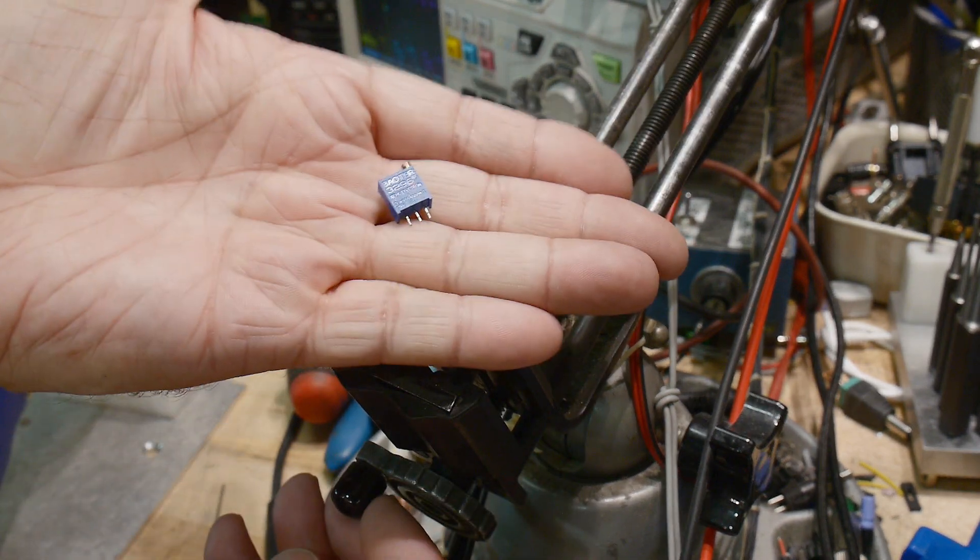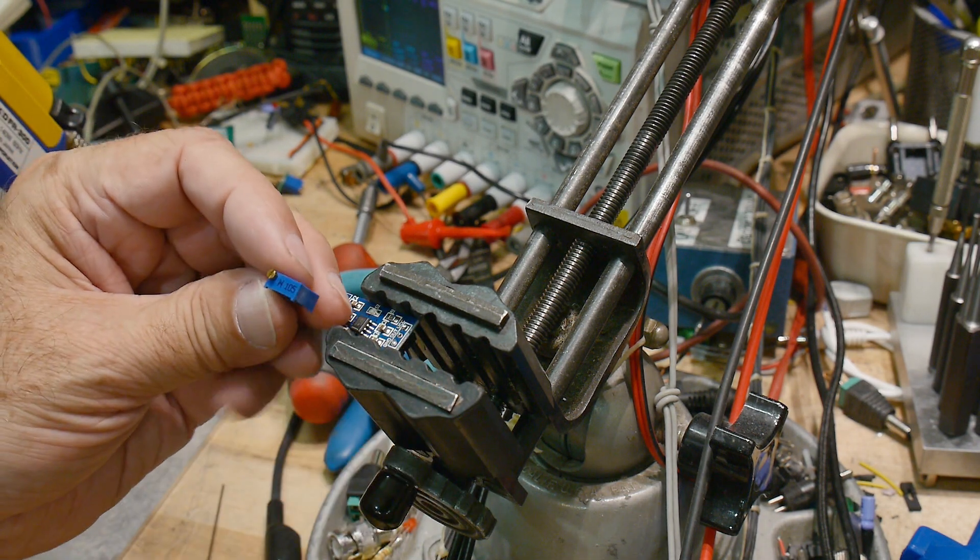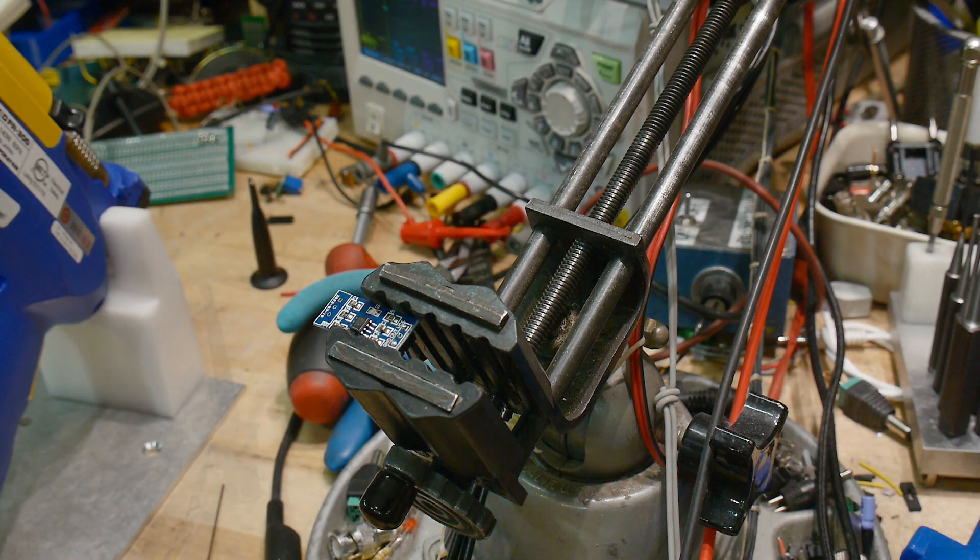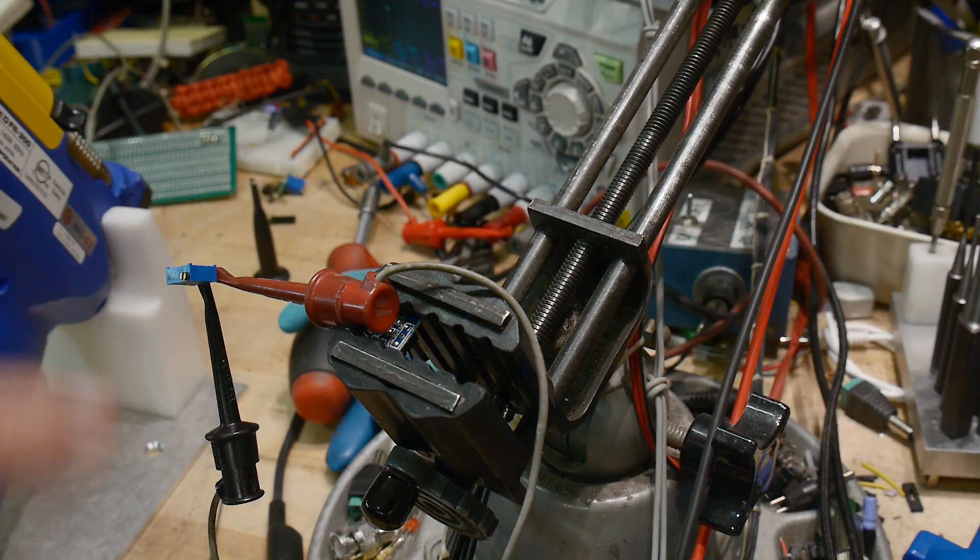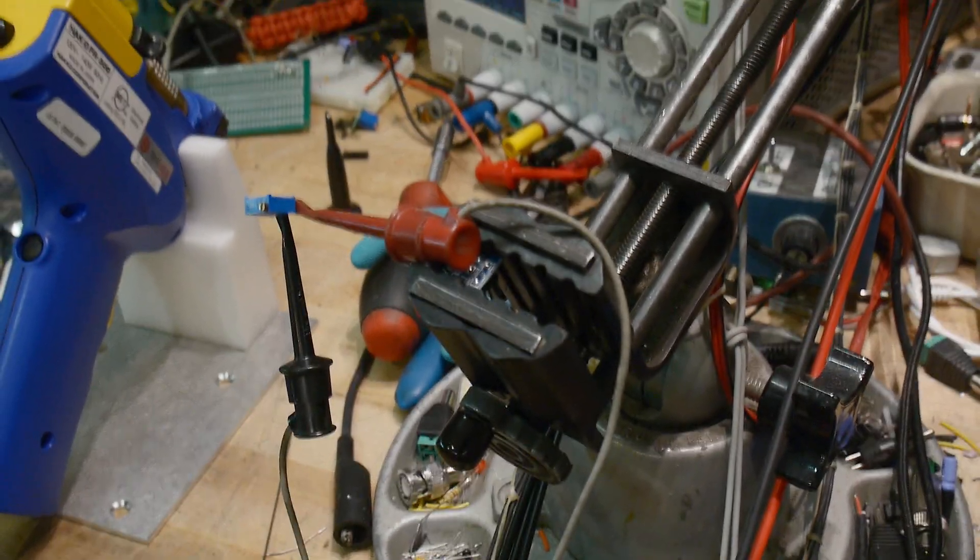So now we've got to figure out what potentiometer is being used. Since it's a 105, which is a, wow, I think that's a one meg. Let's measure them. Okay, so I've got some clip leads on it. We can take a look. And it is saying one meg. Yeah, it's a one meg ohm. One meg ohm.